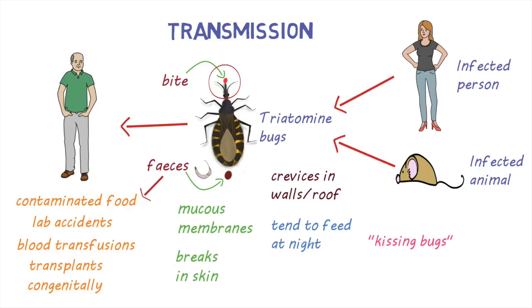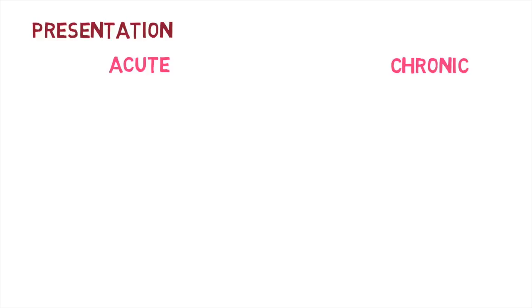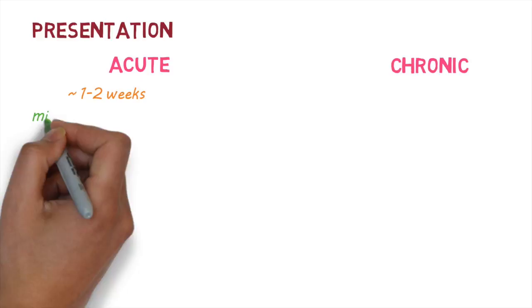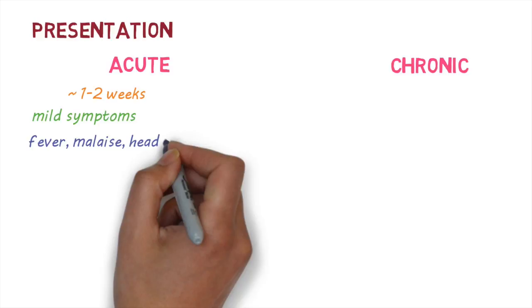Let's have a look at how the disease presents. There are two main stages of the disease: an acute phase and a chronic phase. In the acute phase, symptoms generally start to develop after about one to two weeks following the bite. These are generally mild and nonspecific. Symptoms include fever, malaise, headache, rash, diarrhea, and vomiting.